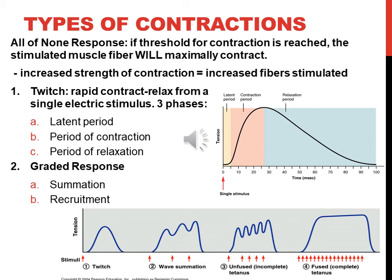Recruitment — also known as multiple motor unit summation — involves getting more motor units involved to control the force of contraction more precisely, as dictated by the size principle. More motor units engaged equals greater force, depending on what's needed for the activity.